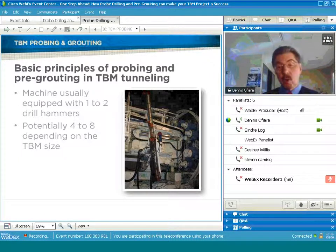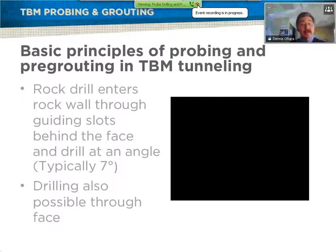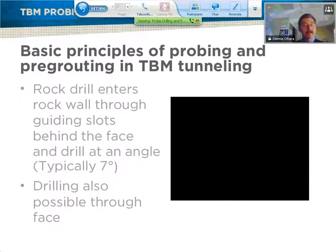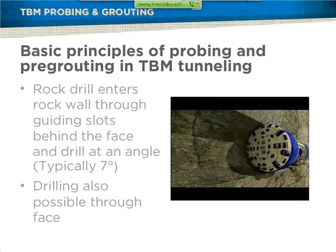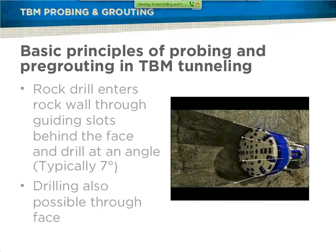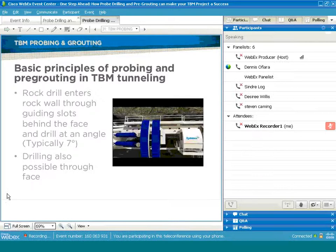For future machines, if there's a lot of grouting called out, it might be an advantage to put more drills on to cut down the drilling time — dependent on the size and type of machine. Probe drilling can detect ground conditions ahead of the TBM, such as fault zones or water, and is typically performed at distances of 30 to 50 meters ahead of the machine. If weak ground is found, it can be pre-grouted to increase ground stability.